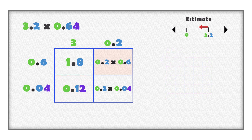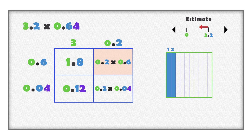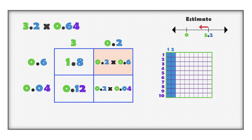Multiply two tenths with six tenths. When multiplying a part of a whole with another part of a whole, we get smaller pieces. Start with two tenths. Divide the two tenths into ten equal parts. Six tenths of two tenths is six out of ten of each of the two tenths. This is twelve parts out of one hundred total parts, or twelve hundredths.